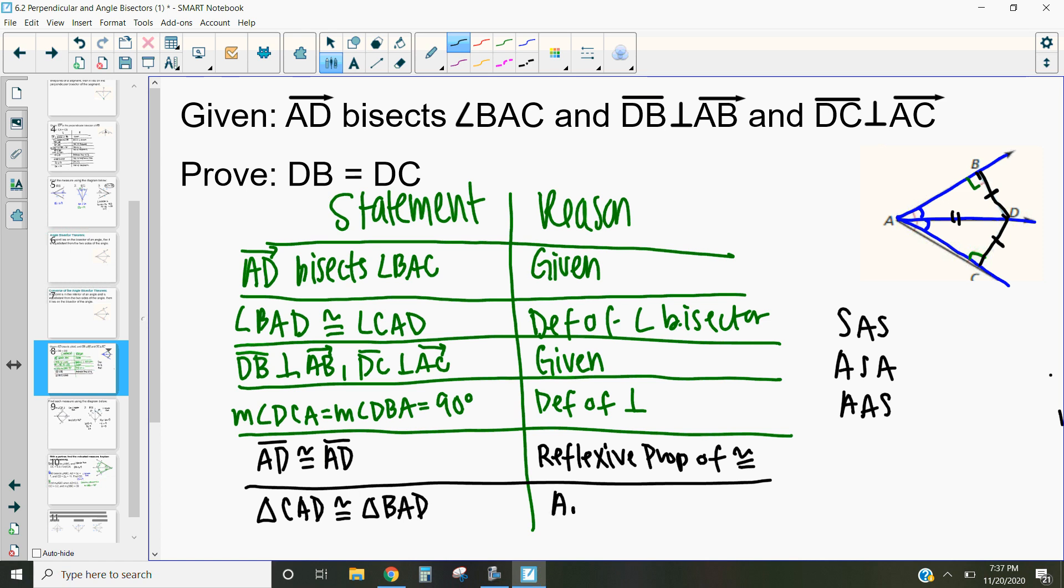By the angle angle side triangle. That triangle was not good. Let's try a new one. Triangle congruence theorem. Which basically says if two angles and the non-included side are congruent, then the two triangles are congruent.